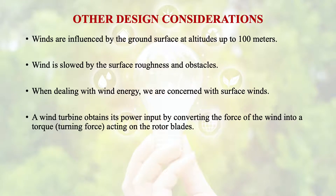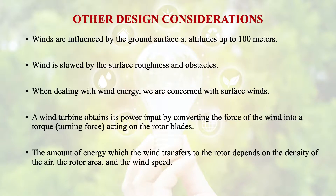A wind turbine obtains its power output by converting the force of the wind into a torque — a turning force acting on the rotor blades. The amount of energy which the wind transfers to the rotor generally depends upon the density of the air, rotor area, and the wind speed. We have already derived this relationship in our previous module.